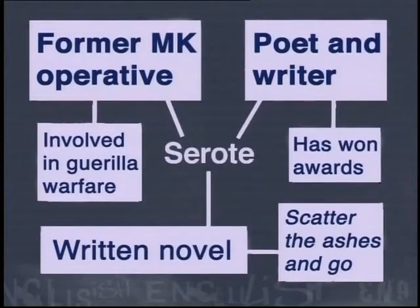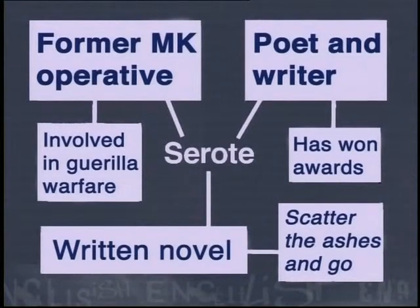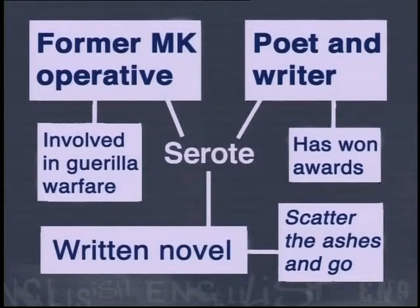This means that you might work better with pictures than with words. If we had to construct a mind map about the information we've just read about Sorote, this is what it might look like. If you had to study this information on Sorote for an exam, it would be easy for you to remember that there are three important pieces of information. Firstly, he is a former MK operative. Secondly, he is a poet and writer. And thirdly, he has written a novel.